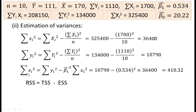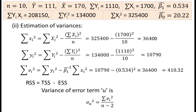Here, summation ei² is the residual sum of squares. Summation small yi² is the total sum of squares, and β₁ cap times summation small xi² is the explained sum of squares. Therefore, the variance of the error term u, σ²ᵤ, equals summation ei² divided by (n − 2), and we get σ²ᵤ equal to 51.29.